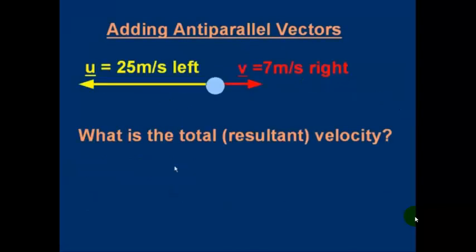Now let's talk about anti-parallel vectors. Here's an object that's got two velocities. V is 7 meters per second to the right, and U is 25 meters per second to the left. And you might say, well, how can something move in two directions at once? Well, this could be you standing on a train. Then you decide to start running along the train corridor at 7 meters per second to the right. But while you're running, the train might be moving at 25 meters per second to the left. So you are actually moving in a way which is a combination of these two velocities.